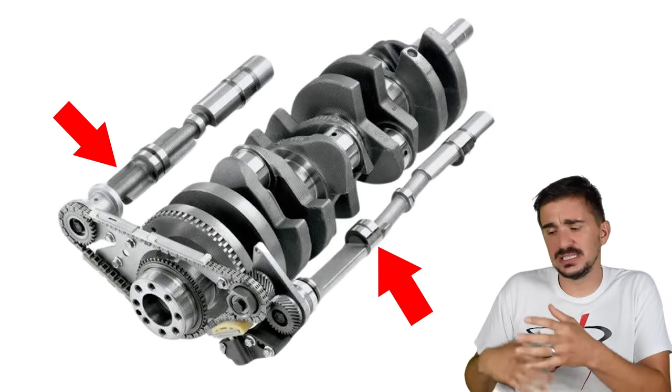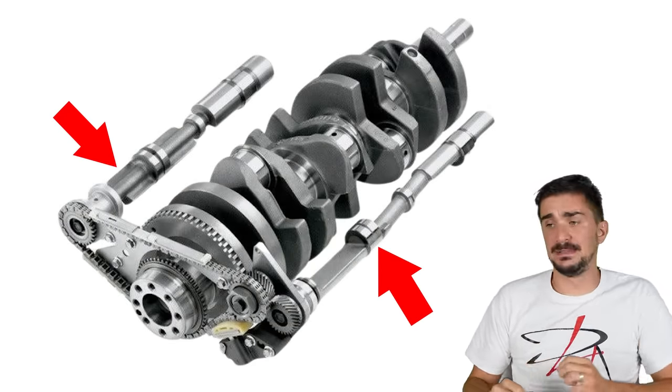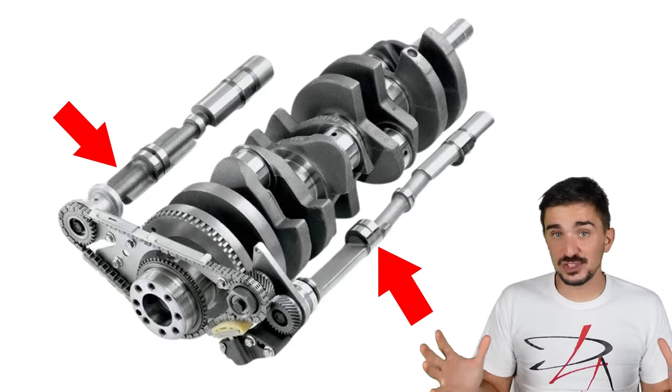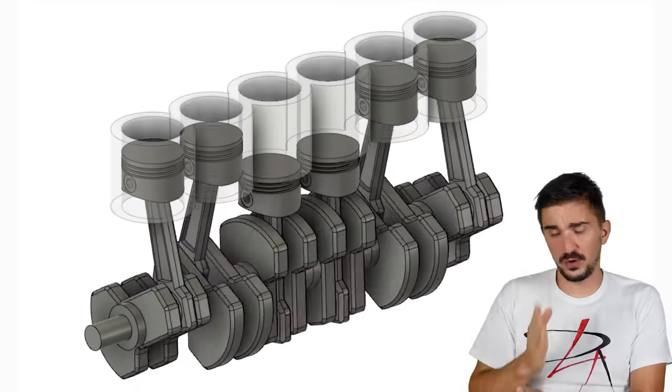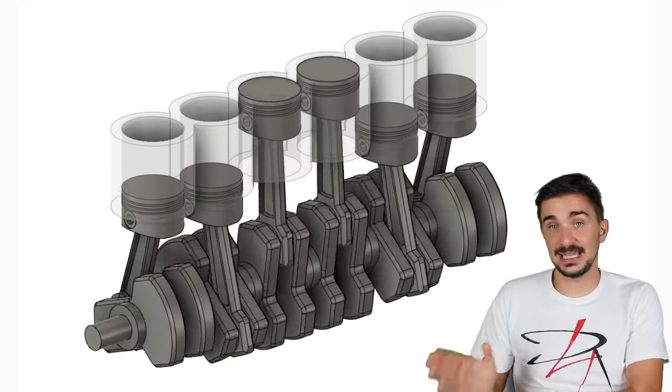However, primary imbalance is more noticeable, and so it has to be resolved with a balancing shaft in the Inline 5. And this does increase friction and cost. Now, the Inline 6 is the real champion here, because it has perfect balance out of the box, both primary and secondary.